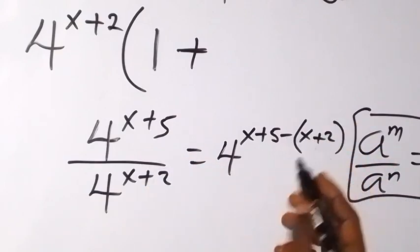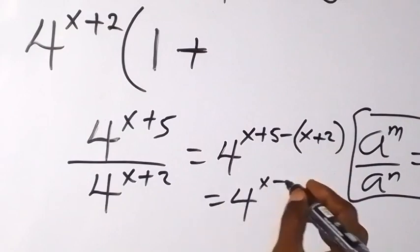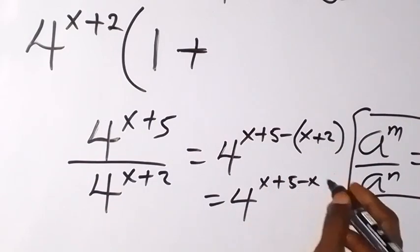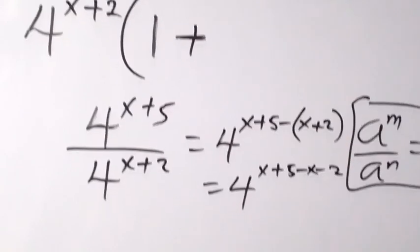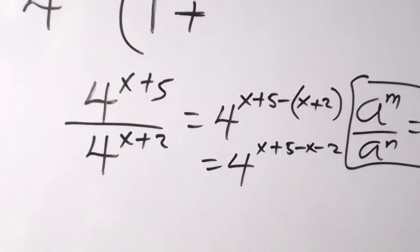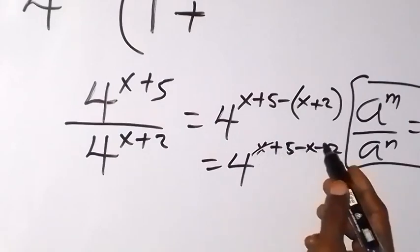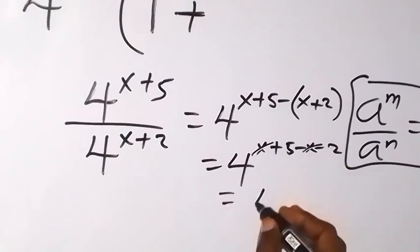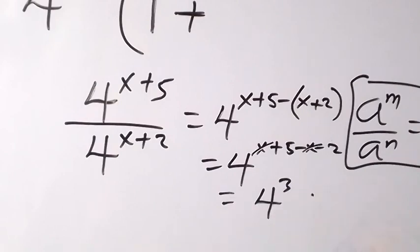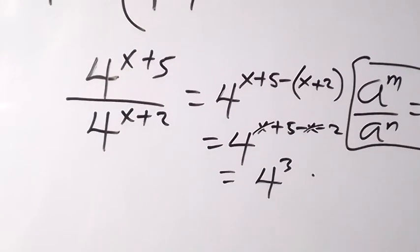And don't forget that when we open this bracket with the minus, we have 4 raised to the power x plus 5, then minus x, then minus 2. So x minus x cancels out, and we have 5 minus 2, which is 3. So we have 4 raised to the power 3, and 4 raised to the power 3 is 64.